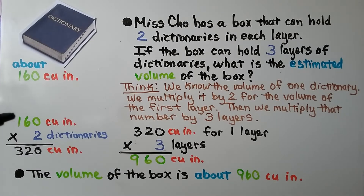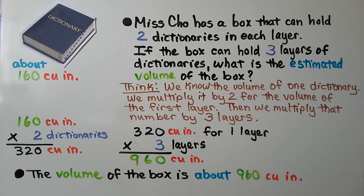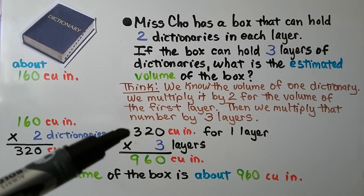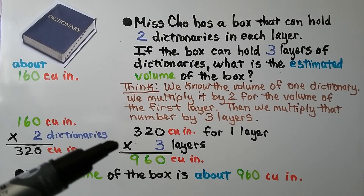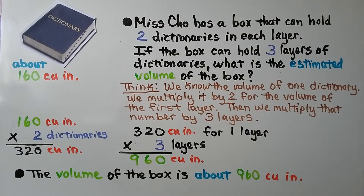160 cubic inches times two dictionaries gives us 320 cubic inches for the first layer. There are three layers, so we do 320 times three layers and get 960. The volume of the box is about 960 cubic inches.